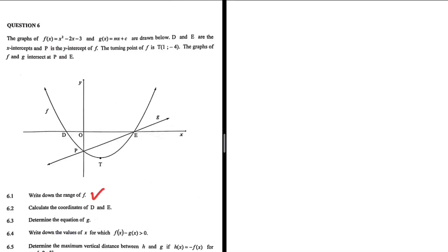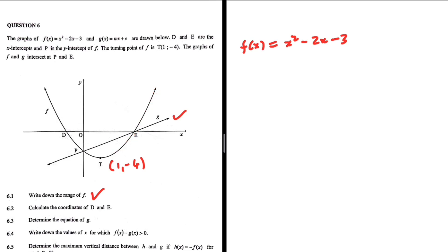Write down the range of f, where f(x) = x² - 2x - 3. We are given the sketch and the coordinates of T, the turning point of f(x), which are (1, -4). As you can clearly see, f(x) cannot be below -4 as -4 is its minimum point. So the range for f(x) is: y ≥ -4.